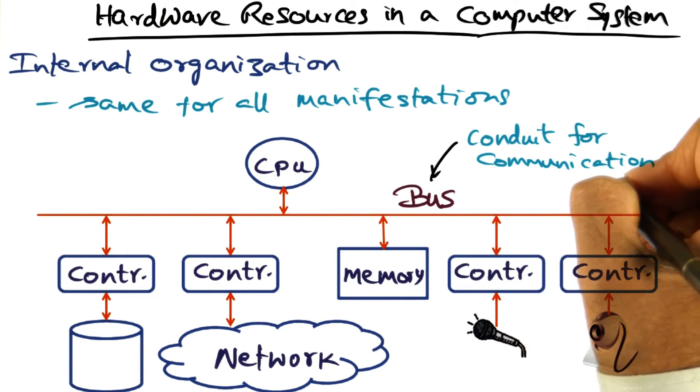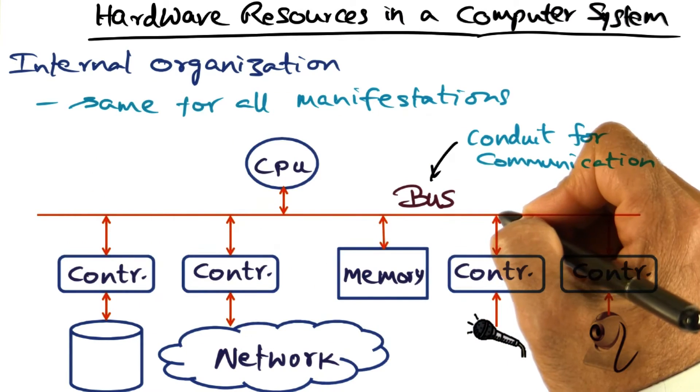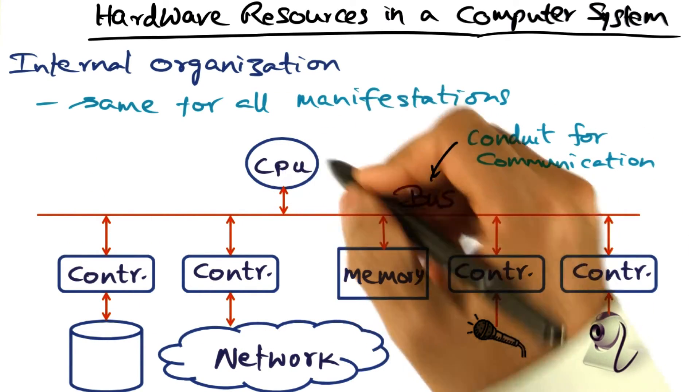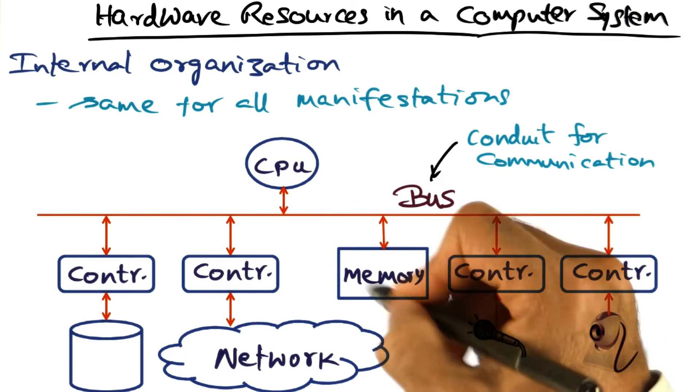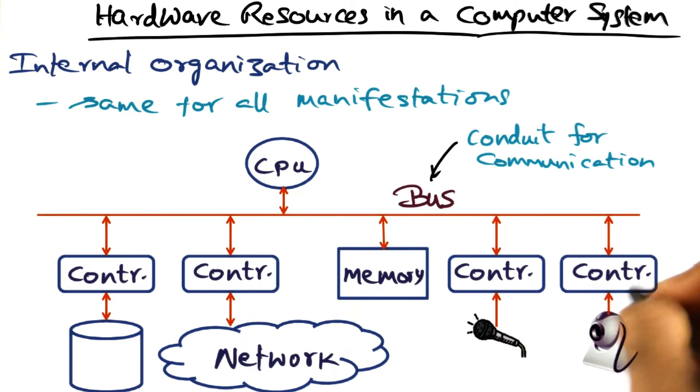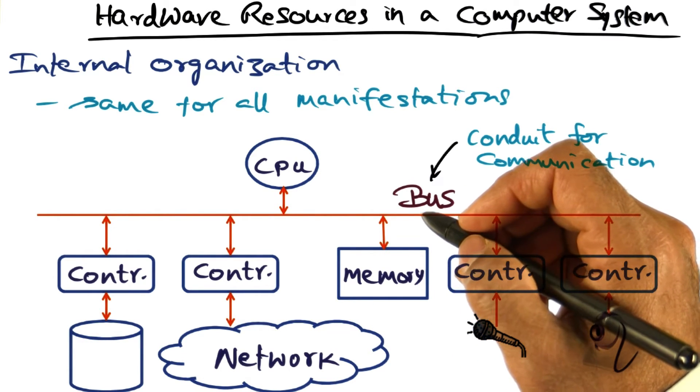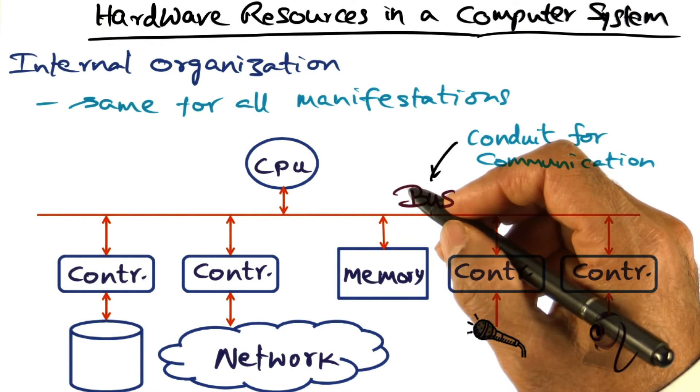So this conduit for communication, which is the bus, serves the purpose of connecting the CPU to the memory, as well as all the IO devices that it may need to interact with in order to do whatever the intent is of the user and the application that they want to run on the computer.